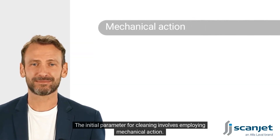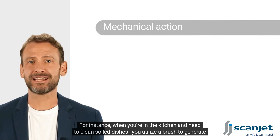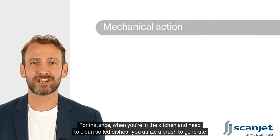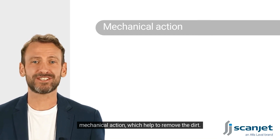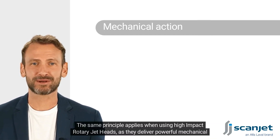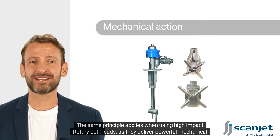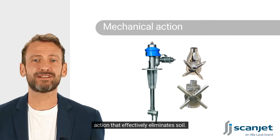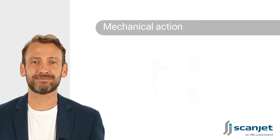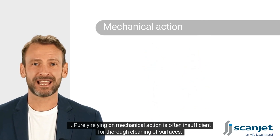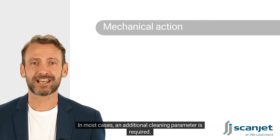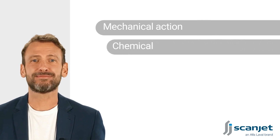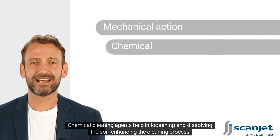The initial parameter for cleaning involves employing mechanical action. For instance, when you're in the kitchen and need to clean soiled dishes, you utilize a brush to generate mechanical action, which helps to remove the dirt. The same principle applies when using high impact rotary jet heads, as they deliver powerful mechanical action that effectively eliminates soil. However, purely relying on mechanical action is often insufficient for thorough cleaning of surfaces.